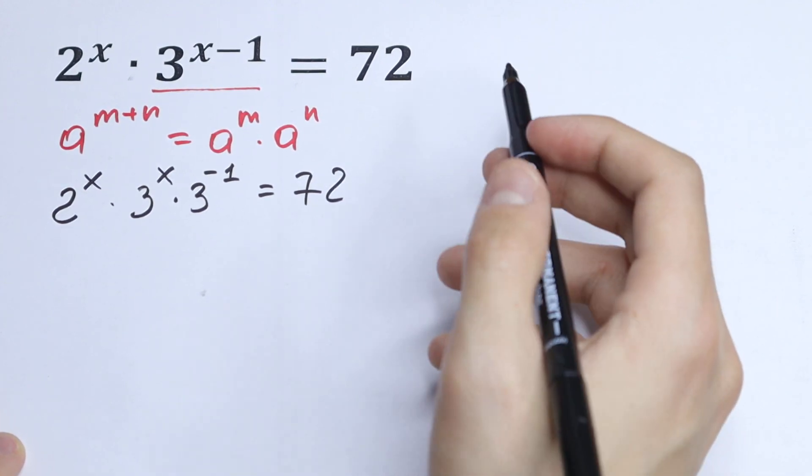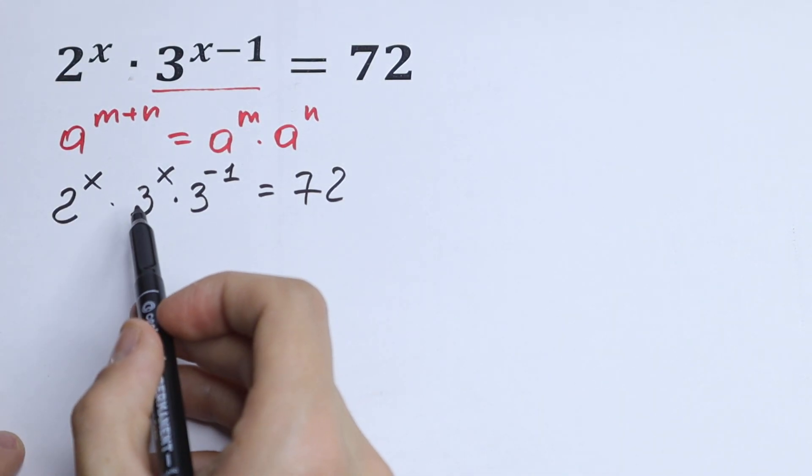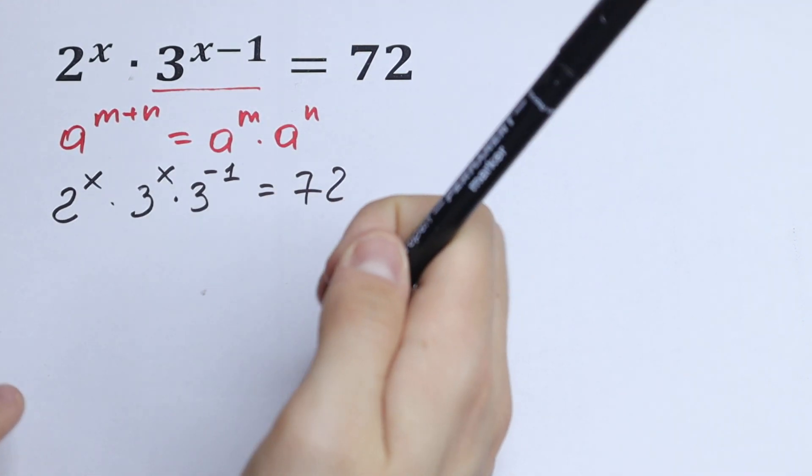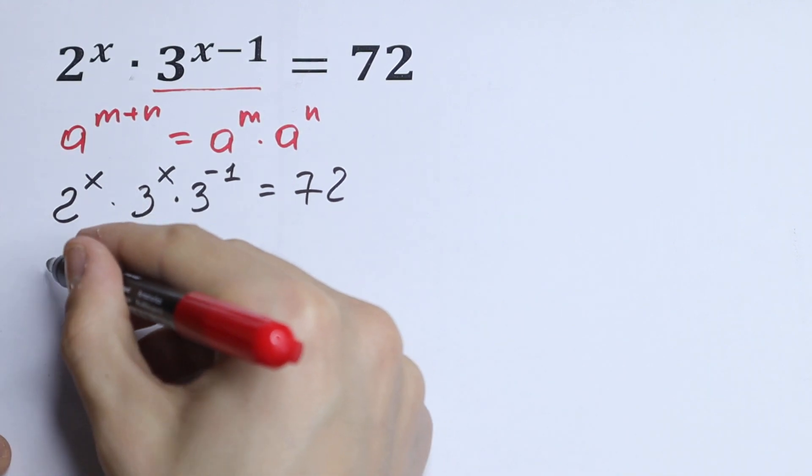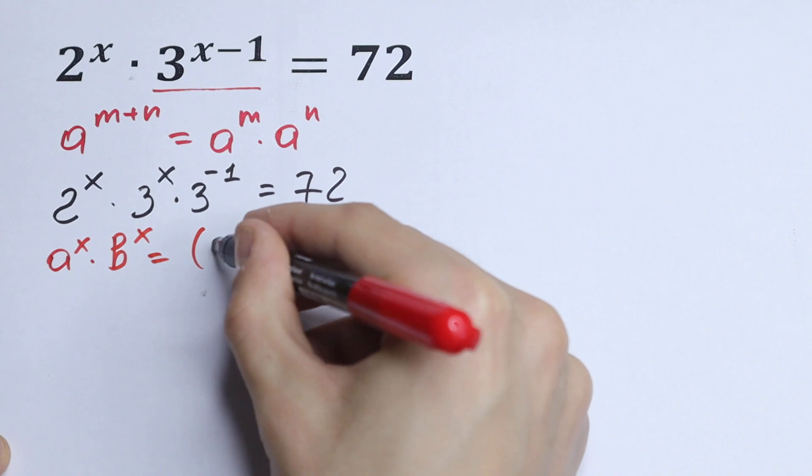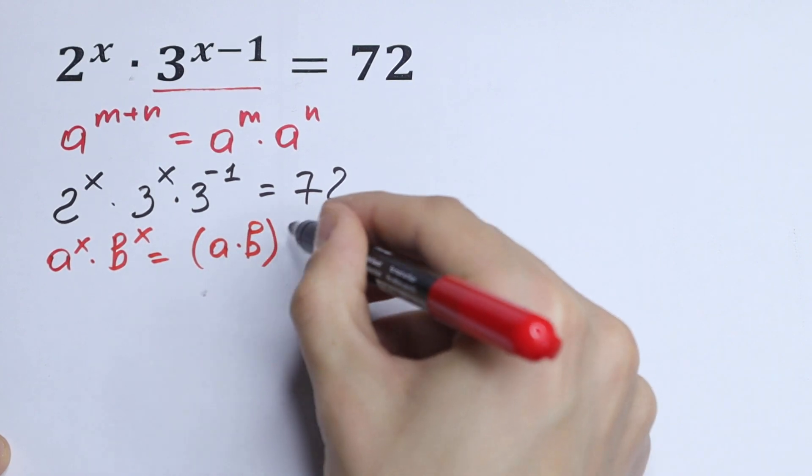What we're going to do next? If we have different bases but the same exponent, we can write it in one parenthesis. So the rule is right here: if we have a to the power x times b to the power x, it will be equal to a times b all raised to the power x.